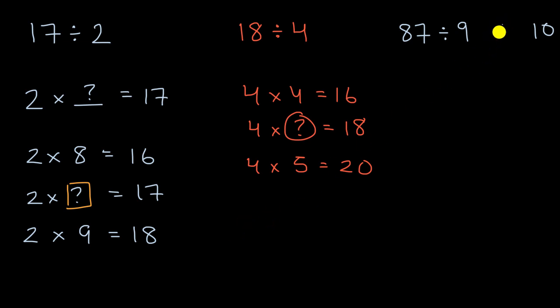So pause this video and see if you can figure that out. What would you put here? Is it less than, greater than, or equal to 10? Well, we know it's not equal to 10. We know that 90 divided by 9 is equal to 10. And if we go one multiple of 9 less than that, we know that 81 divided by 9 is equal to 9.